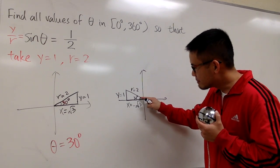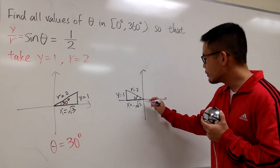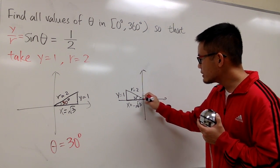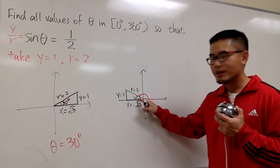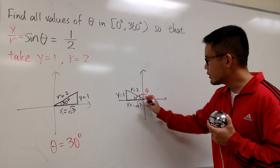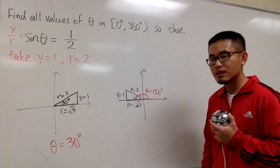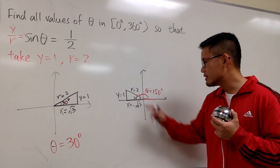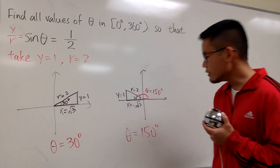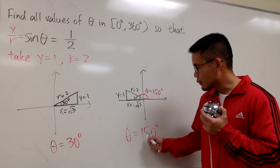However, this is just the reference angle. This is not the actual angle. When you measure an angle, you have to go from the positive x-axis to the terminal side. This is 30 degrees already, so the angle theta from here to here has to be 150 degrees. 180 minus 30 gives you 150. So this is the second answer: theta equals 150 degrees.